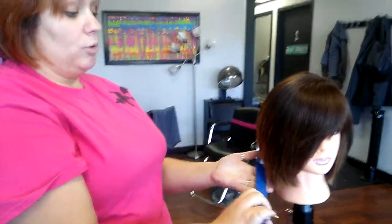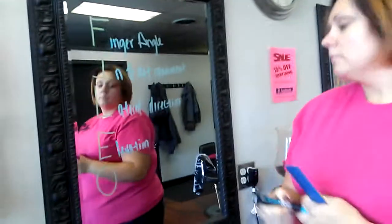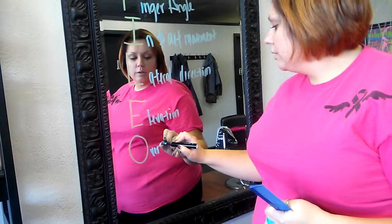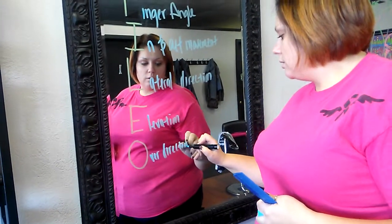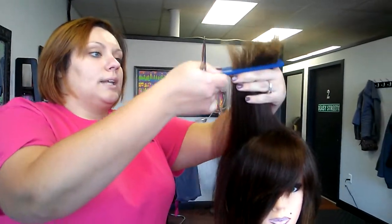Elevation, like we discussed with the SimCore tool, is any time we pick up a hair and we move it past zero degrees. Elevation can be anything from 10 to 45 to 90 all the way up. Elevation over direction refers to taking a section of hair and over directing it across the head shape past 180 degrees. When we do that we are creating nice full rounded layers, and it also helps us keep the density at the bottom of the hair section.